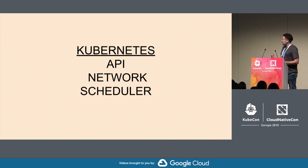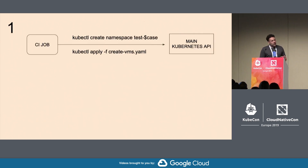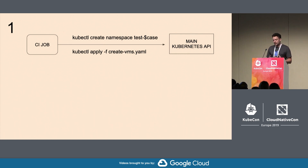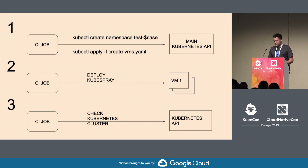Going back to the CI: instead of calling a cloud API, what we do is create a namespace for the test case and just apply the VM definition to get the VMs. The next steps are exactly the same — we get the VM IPs by watching the Kubernetes endpoints, reusing all the Kubernetes API, and then we deploy the Kubernetes cluster.